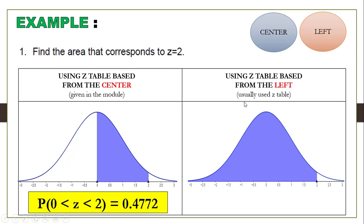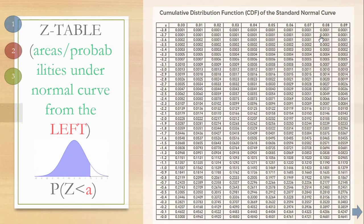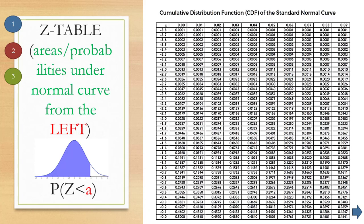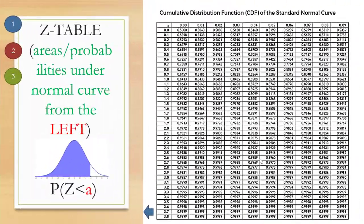On the other hand, if we use the Z-Table based from the left, this is how we use it. As you see, the first portion of the table has all negative values. This is the big difference between the Z-Table from the left and the Z-Table from the center — it has exact negative values. Since the given is Z equal to 2, we move to the next section which has positive values.